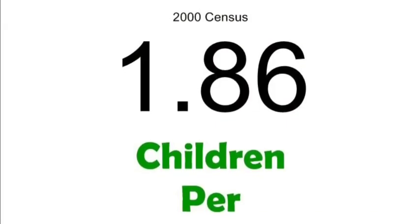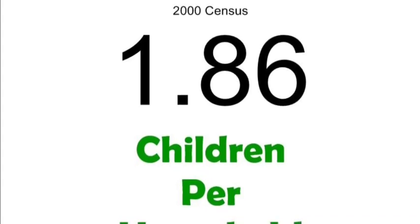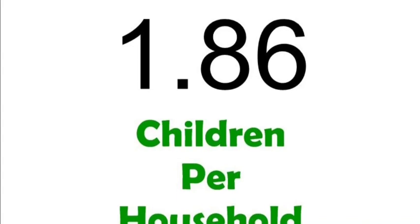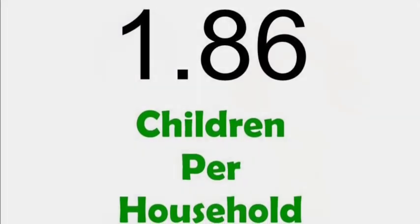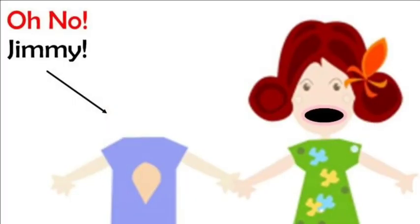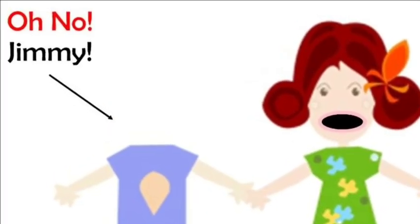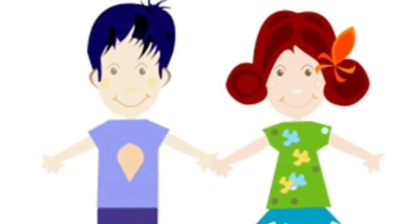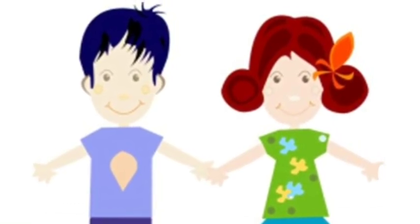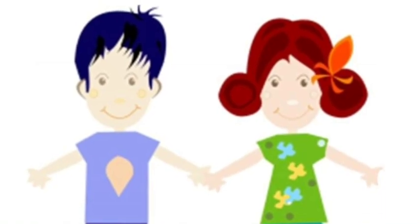A census that took place during the year 2000 says that there are 1.86 children per household. This is an interesting stat because a lot of times the first thing we think of is: how can you have 1.86 children? Take Jimmy and Sally for example — two average children. But how can we have 1.86 children? Do we have a bunch of children walking around with no head? Don't worry, Jimmy didn't lose his head. When we have 1.86 children per household, that really means we have in between one child and two children per household.